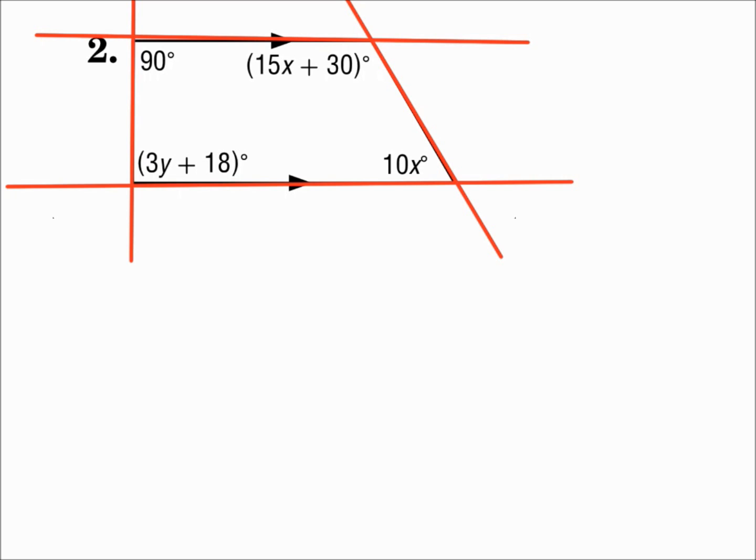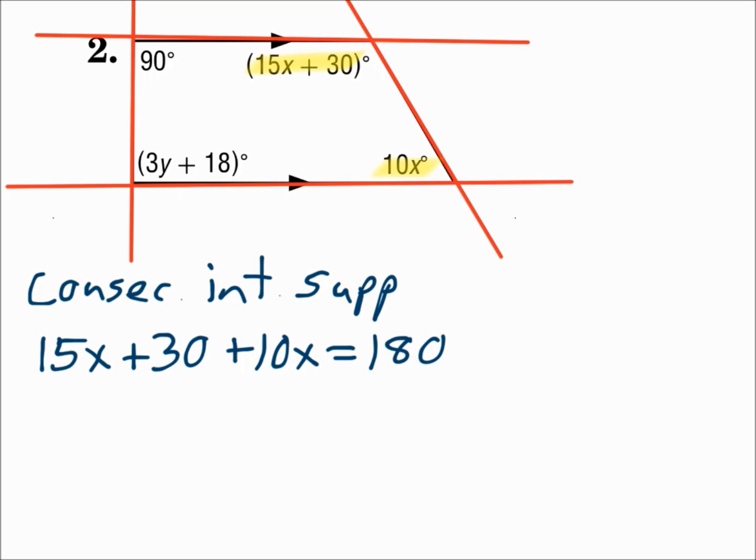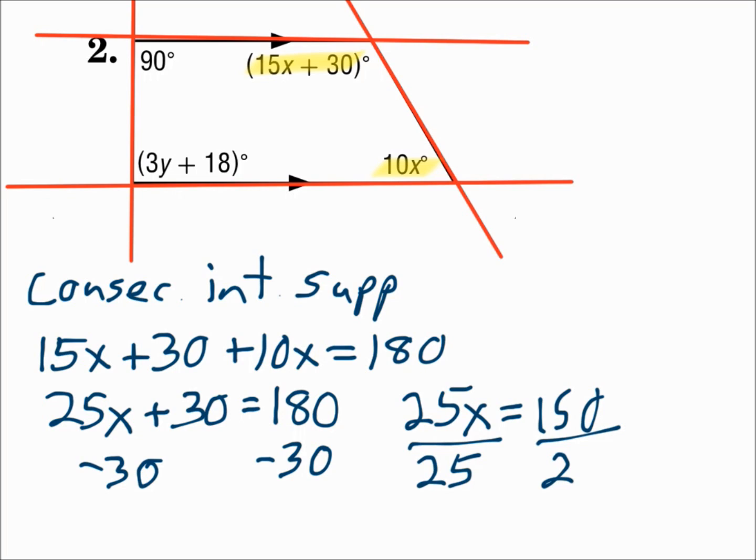Look at the x angles first. Those are on the right hand transversal. Those are inside the two lines, on the same side of the transversal. Those are consecutive interior angles, and they're supplementary. So those angles add up to equal 180. Remember, consecutive interior angles add up to 180. Solve that for x. 15x and 10x make 25x. Subtract 30 from each side. And divide by 25. x is 6.